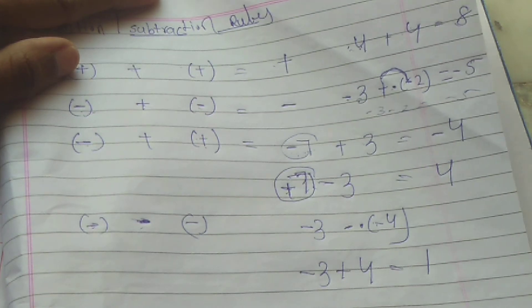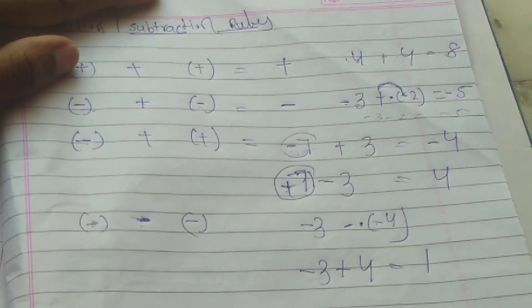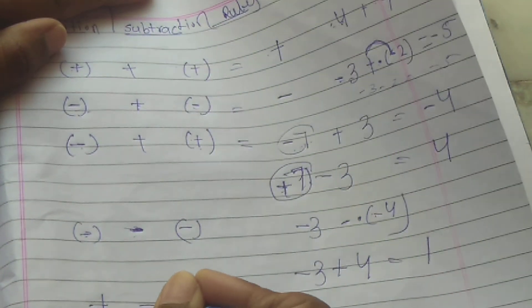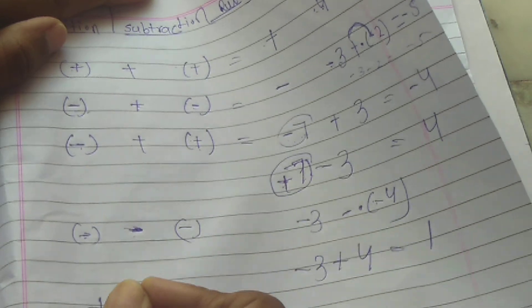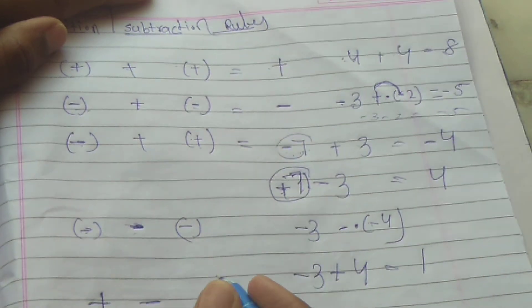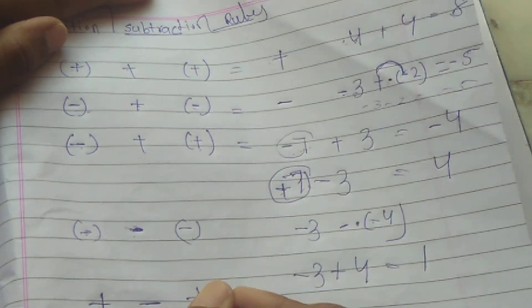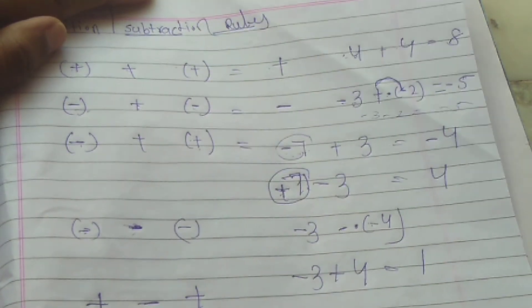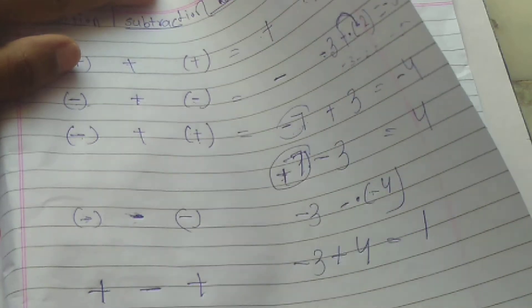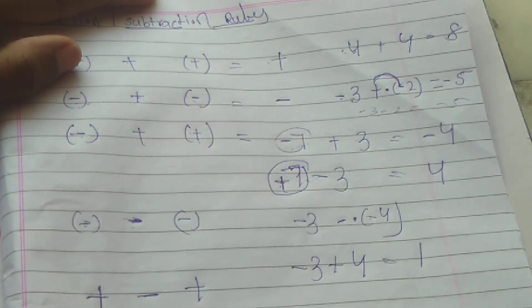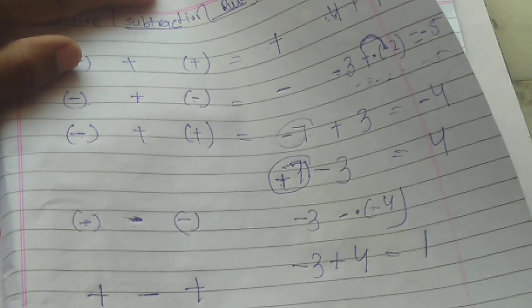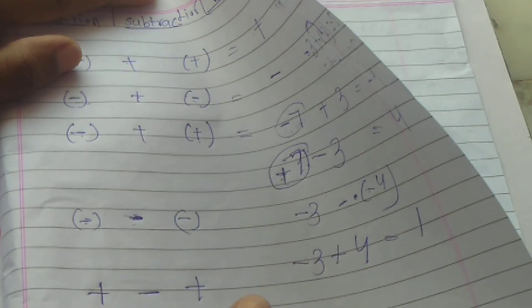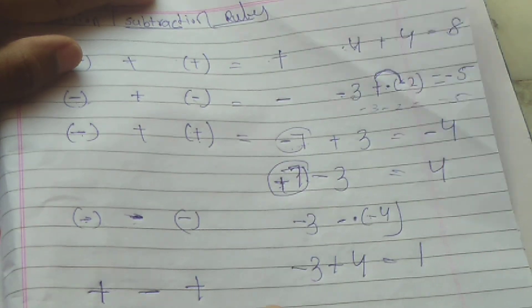Next rule: plus minus plus. For example, 5 minus 3 equals 2.